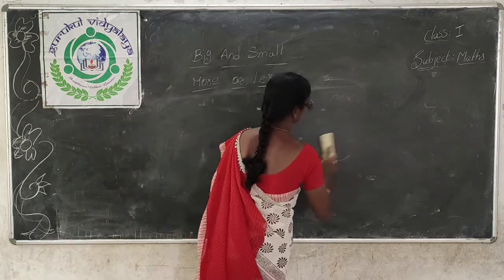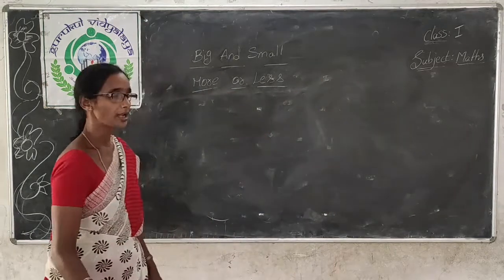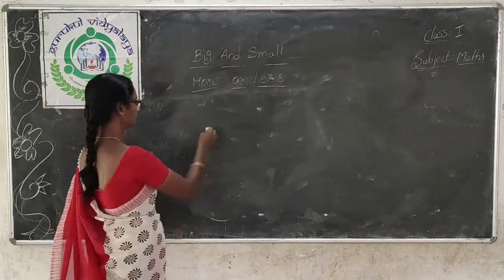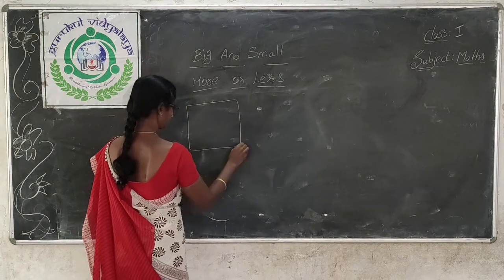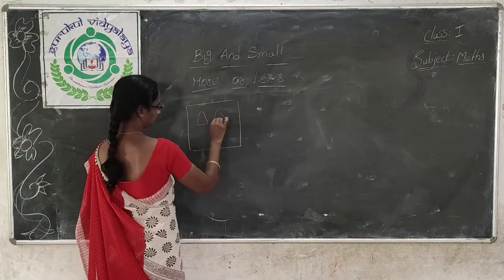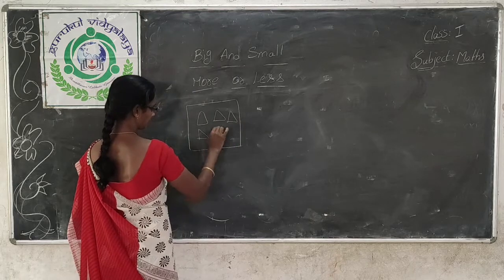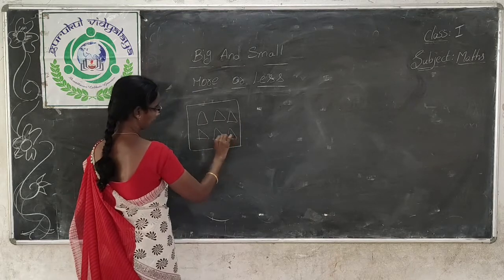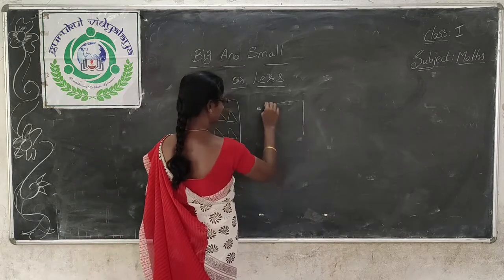Now we are going to learn about more or less, and then big and small with some examples. See here, in this group some triangles are there. How many triangles are there in this group?